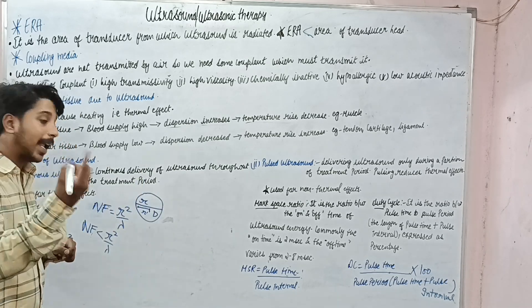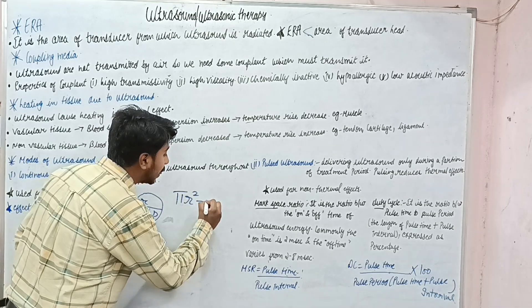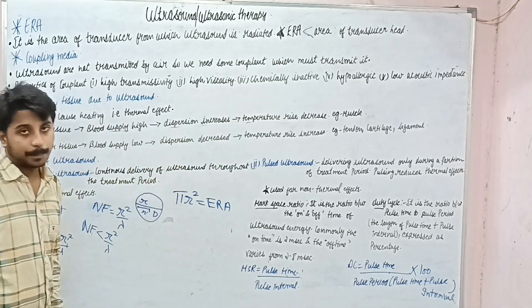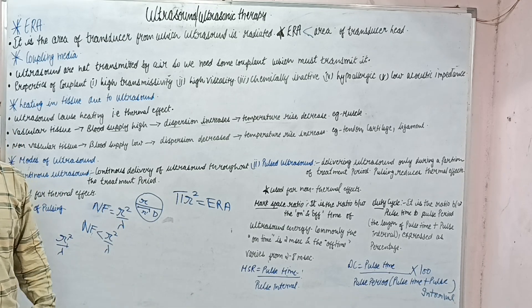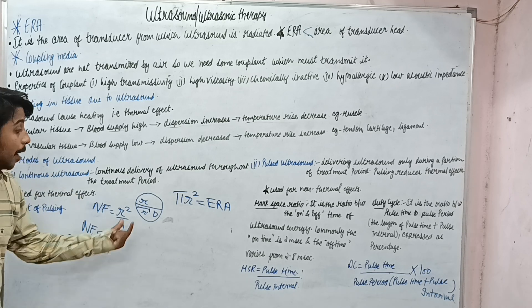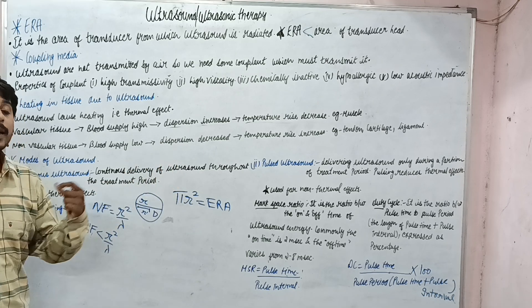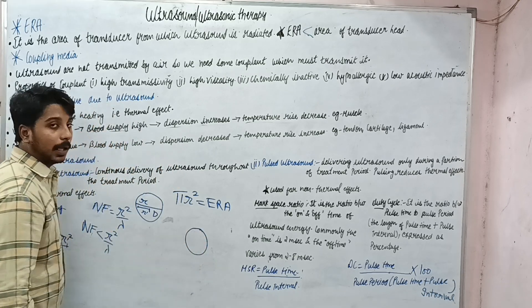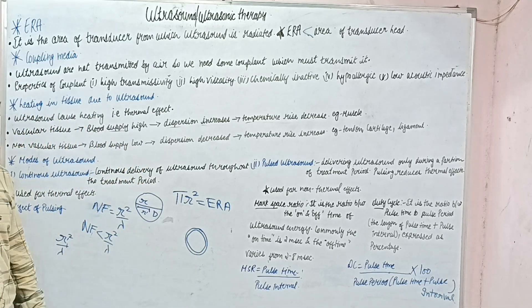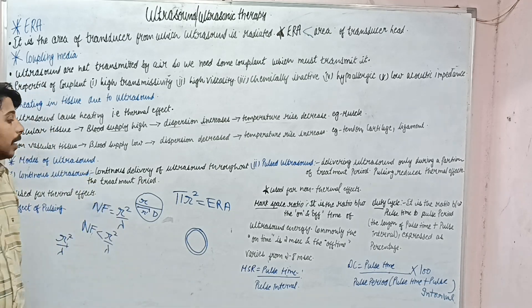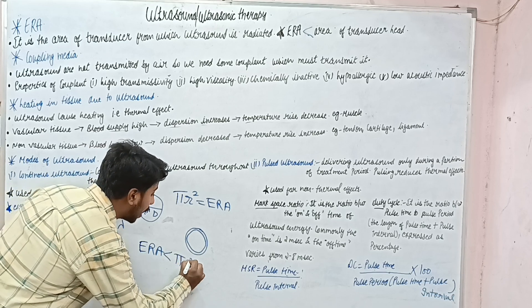To calculate the effective radiation area, you use the actual radius: pi R squared equals the effective radiation area. But your answer must be less than the actual area, because radiation is not occurring from the whole radius. The inner circle of the transducer head is the only part from where the ultrasound wave is coming, so ERA will be less than pi R squared.